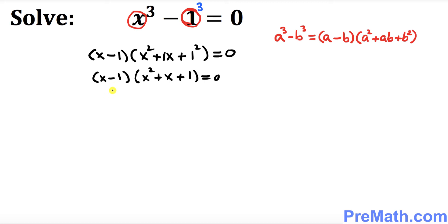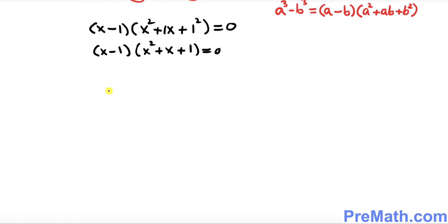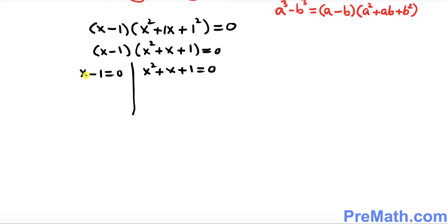Now we can split these two factors up and set them equal to 0. So we write x minus 1 equals 0, and the other factor is x² plus x plus 1 equals 0. From the first factor, x minus 1 equals 0 means x equals 1 is one of our solutions.